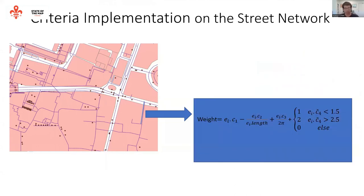Each segment has four values, and we combine them using an equation into one value that shows how accessible a given street or segment is.